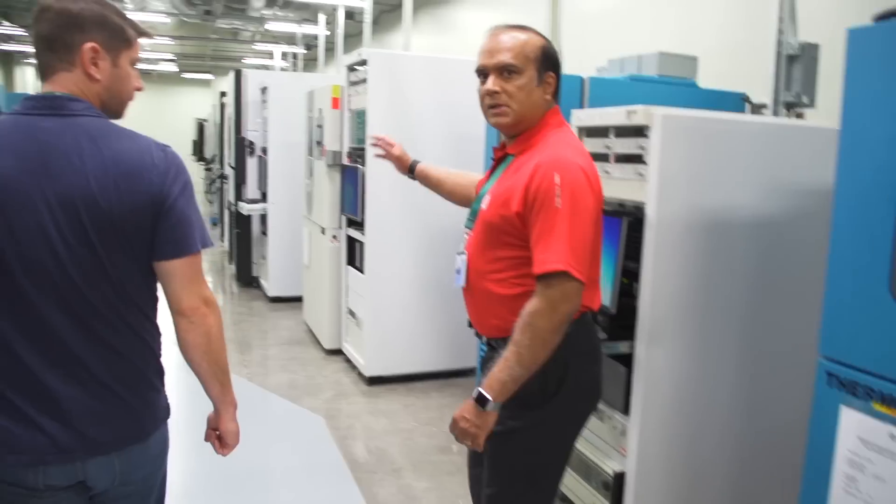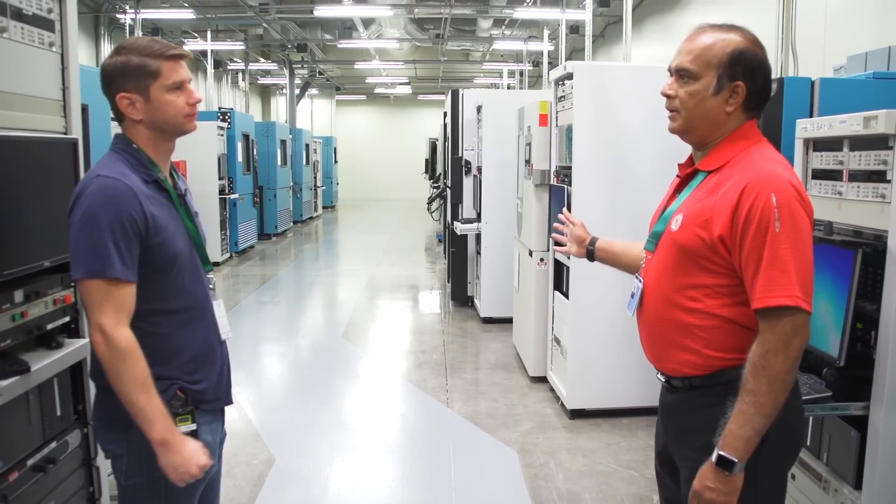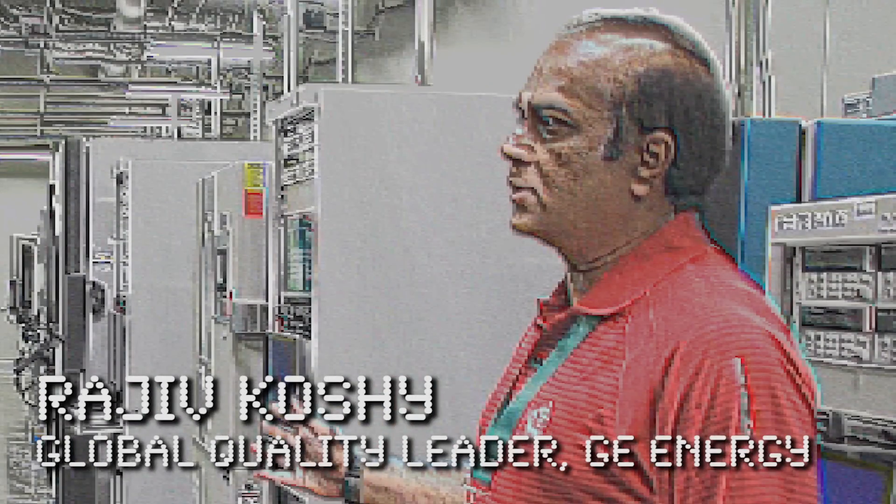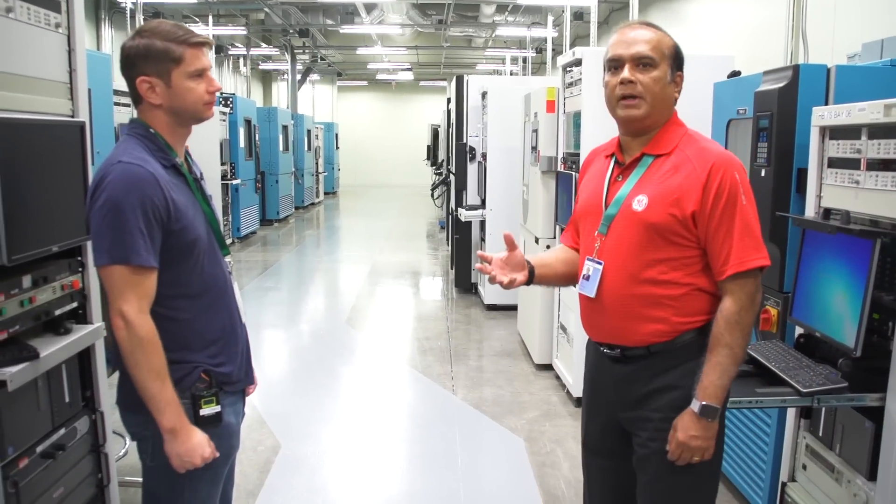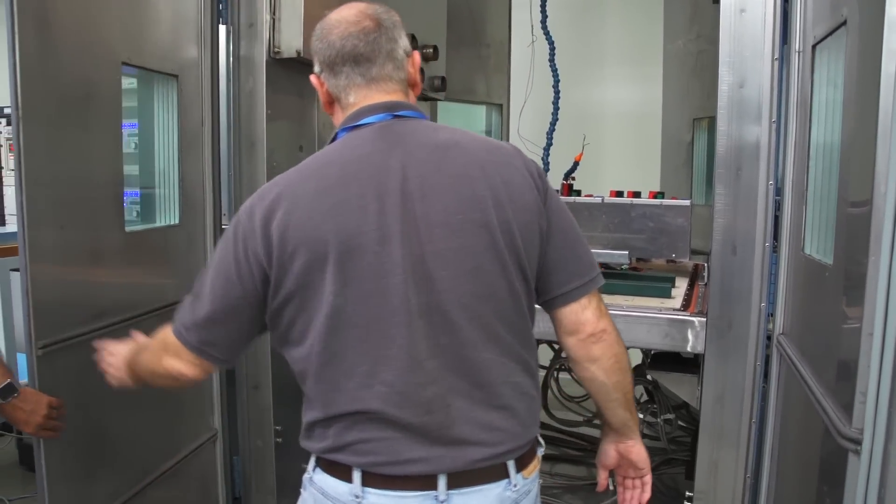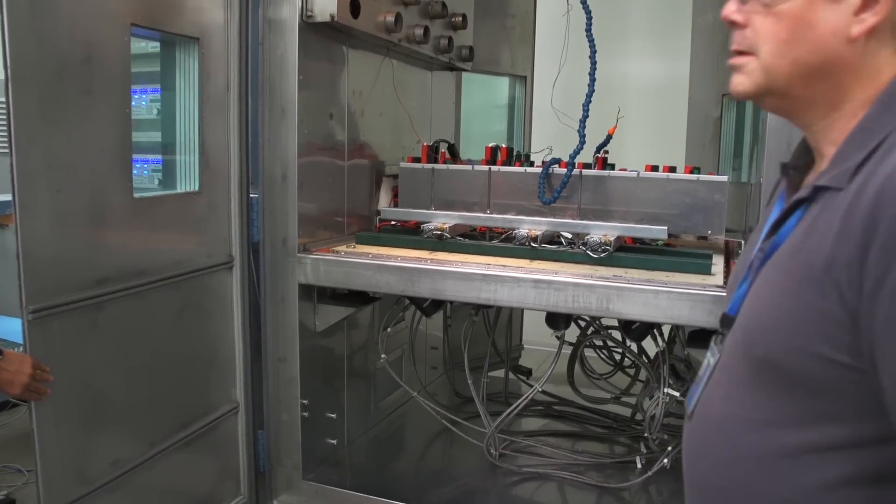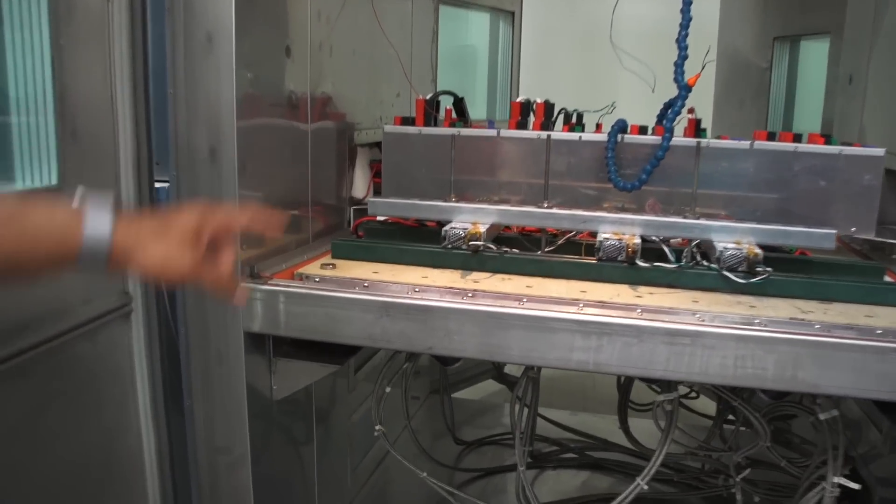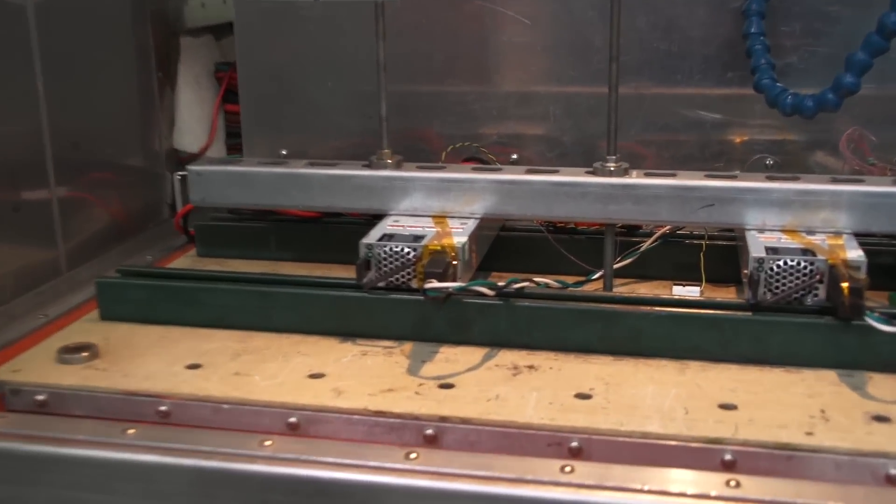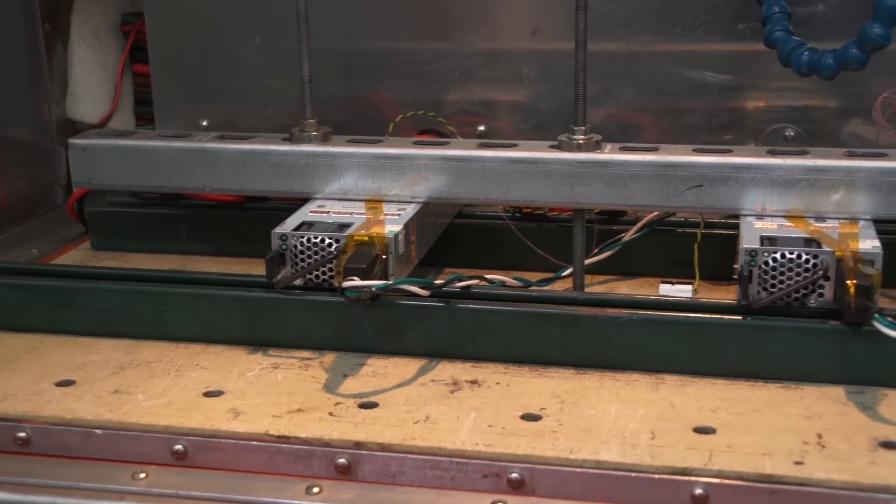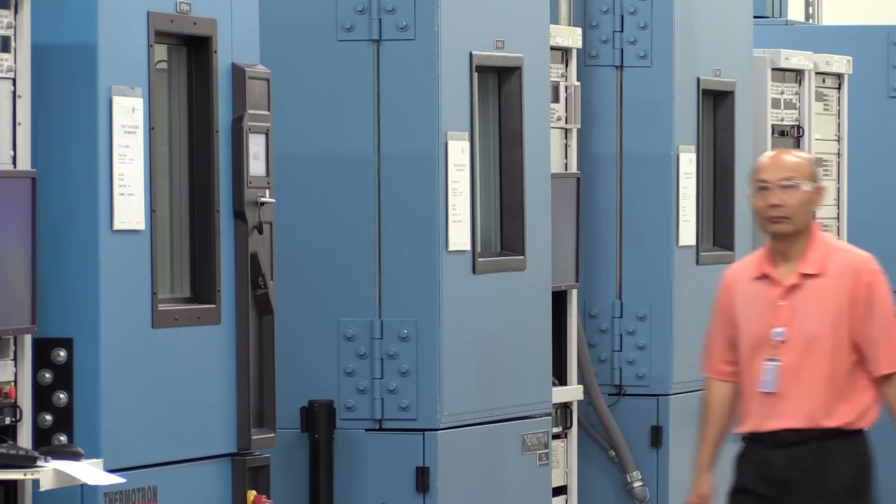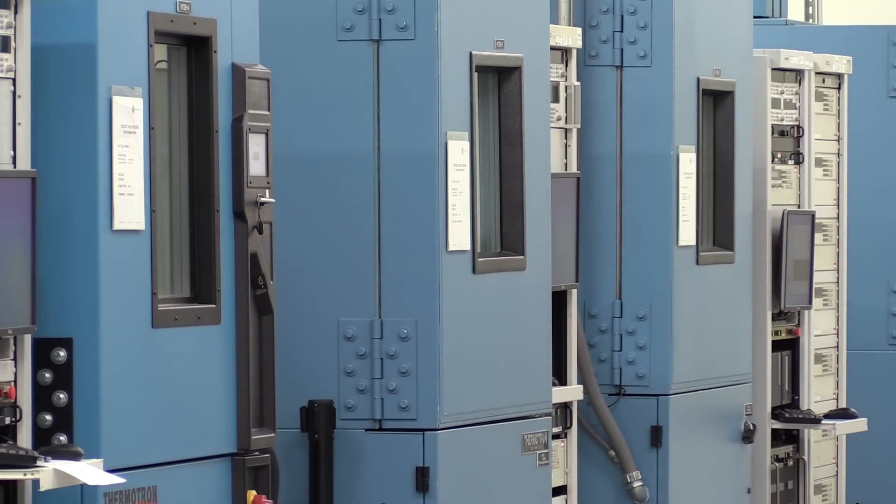So this is our environmental testing area. So we run products through different stresses. So one test we run is called high temperature operating bias. So basically running it at high temperature for a thousand hours. So we take samples from our manufacturing, put it in these chambers and run them. And if they run through the test, fine, no problem.